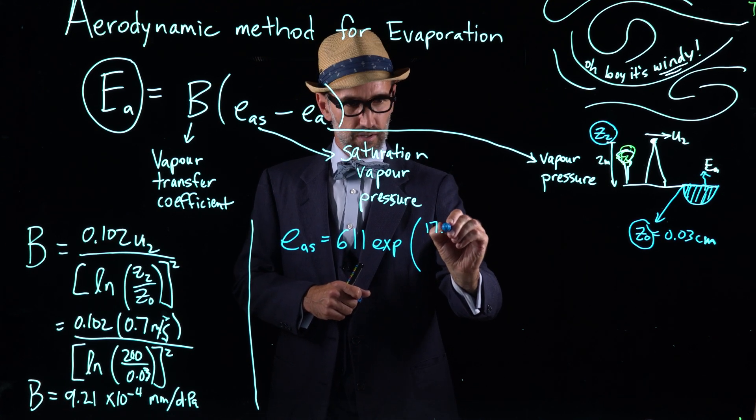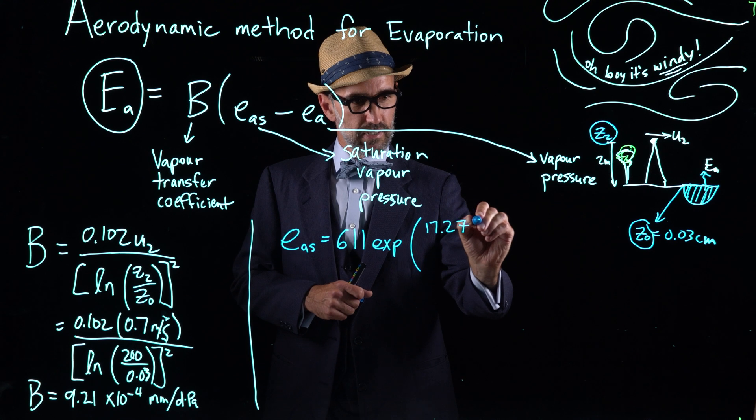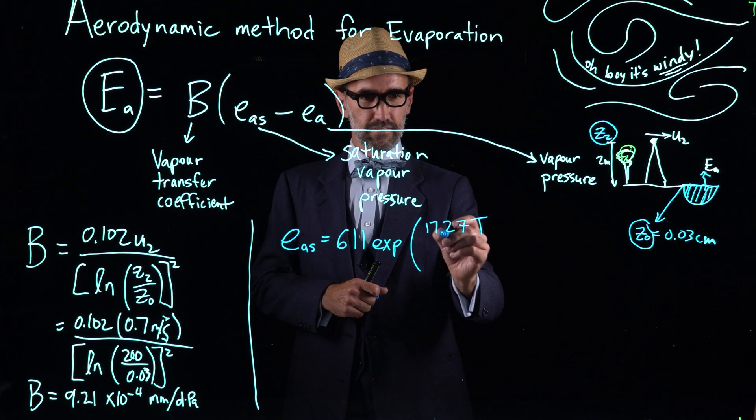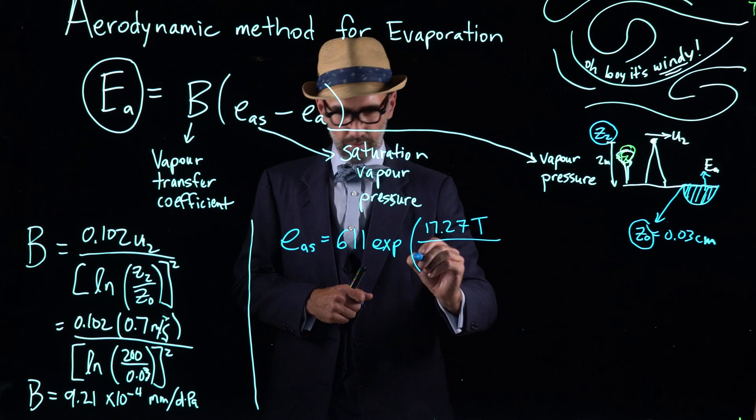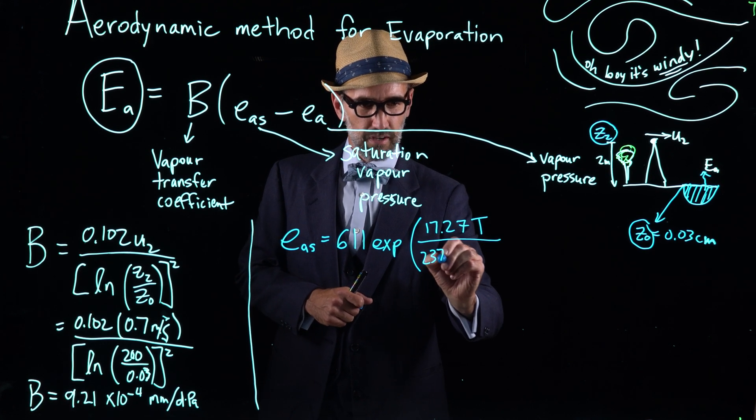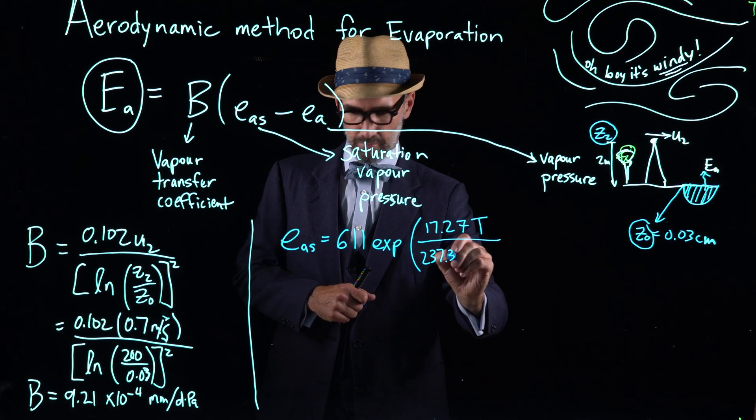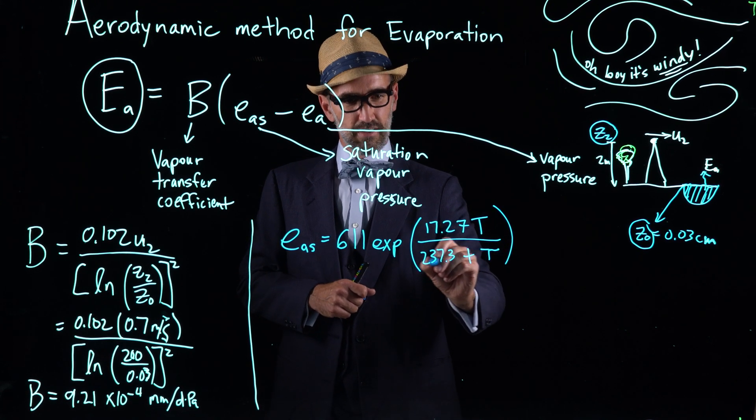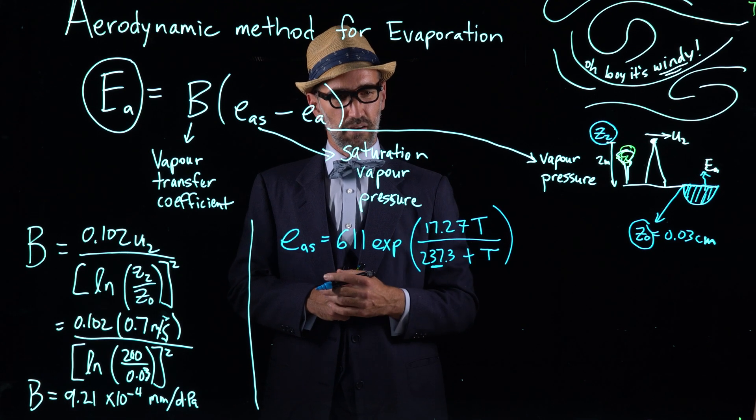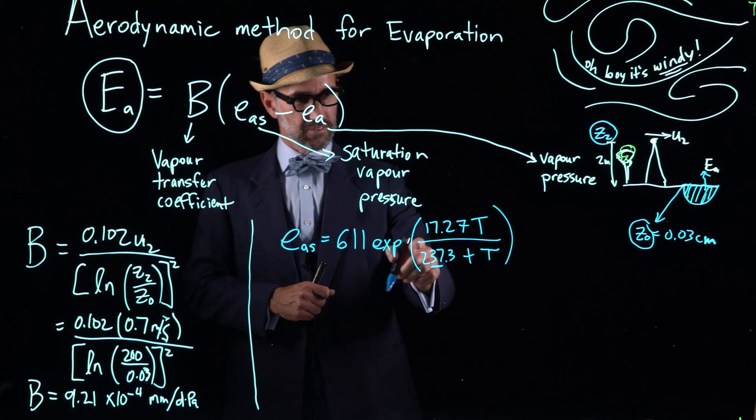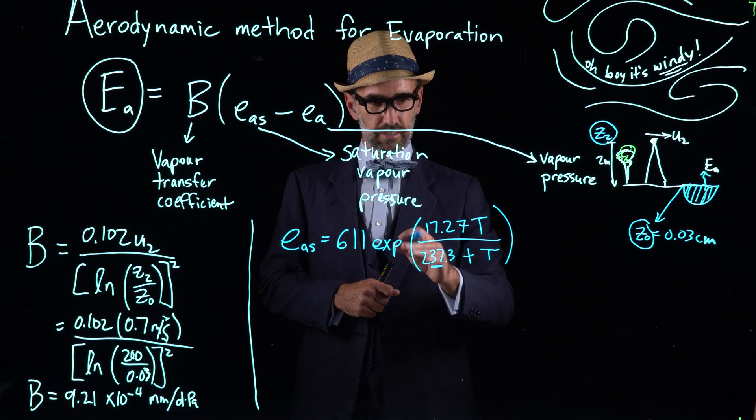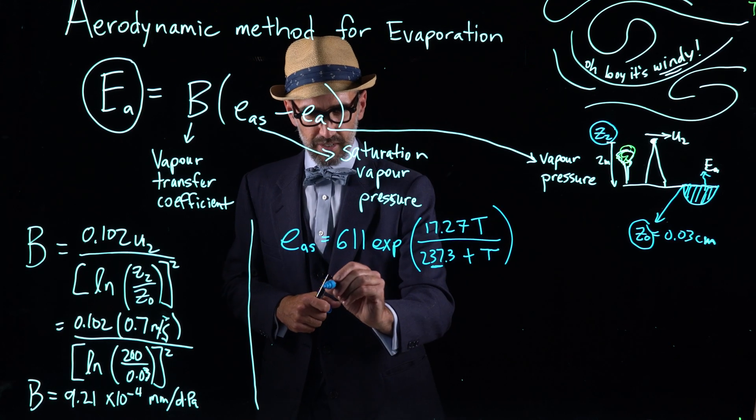And so that comes out in this equation here of 611 to the exponent, everything here is in brackets, 17.27 T where T is the temperature in degrees Celsius, all over 237.3 plus T. I've had students ask before, this is not a mistake, this being a switch for Kelvin. This is the correct unit conversion for degrees Celsius for this problem.